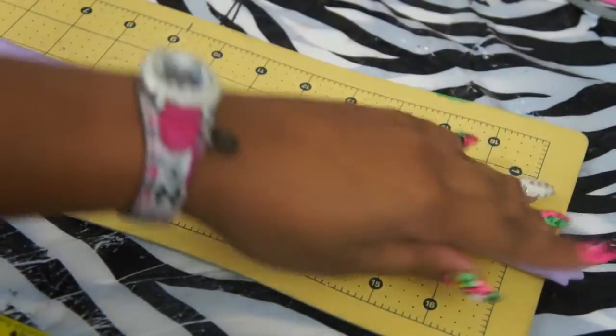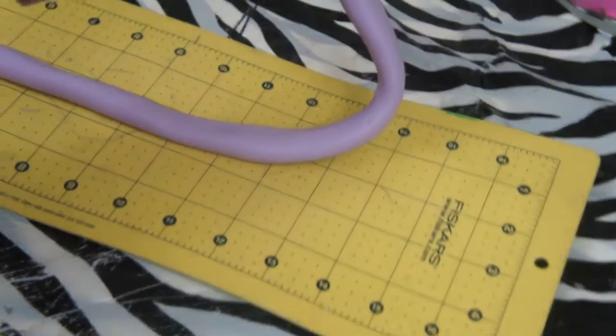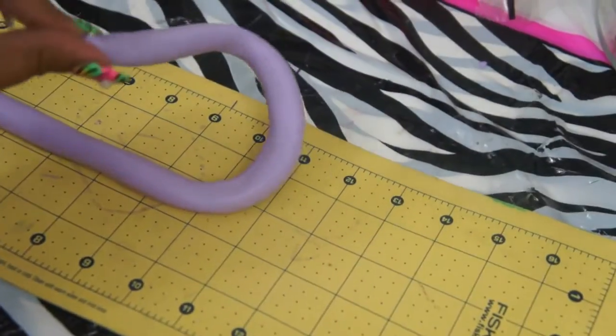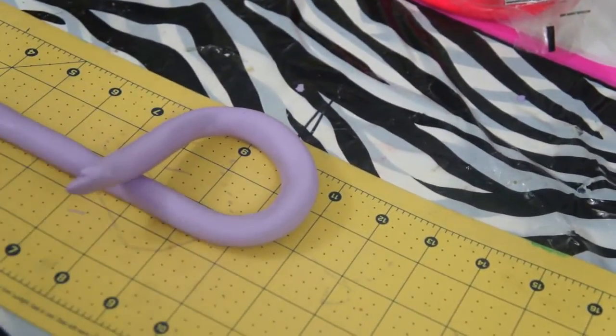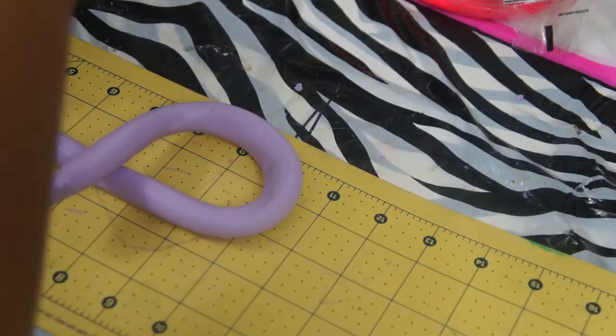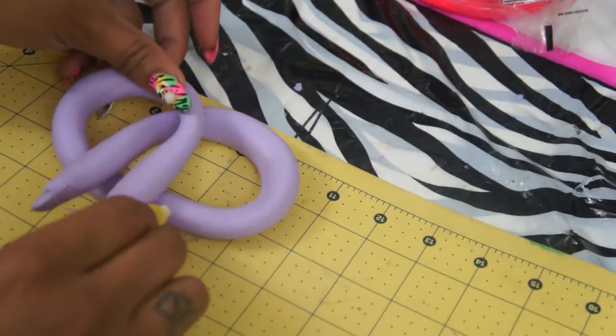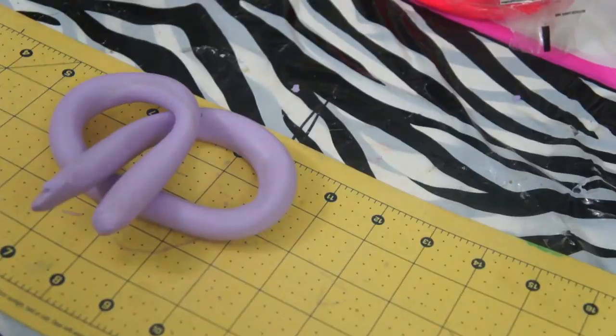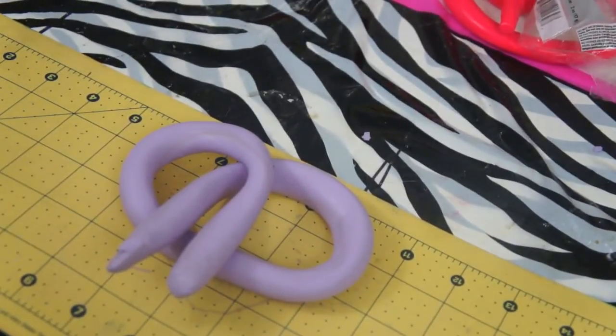Then you're just going to take this end like so, and you're going to cross it over like this. Okay, so you do that with that end. You're going to do the same thing with the other end. And this basically creates the pretzel shape.